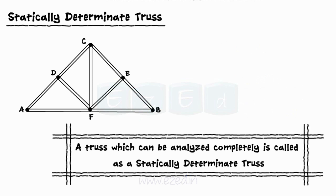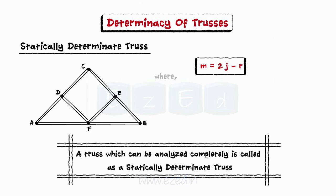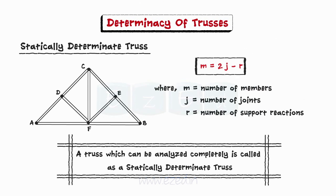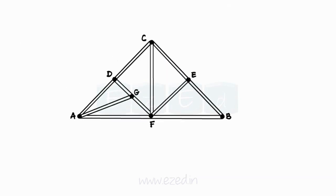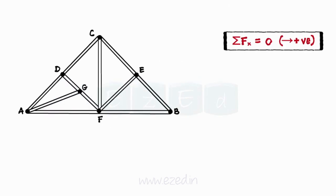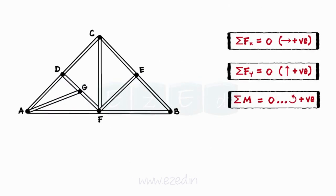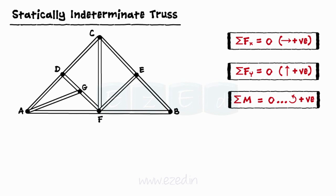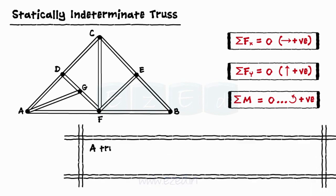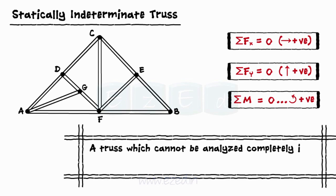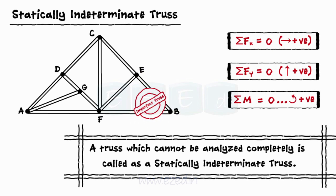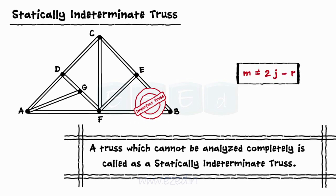For a truss to be statically determinate, the following condition must be followed. This equation gives us a relation between the number of members, joints, and support reactions. A truss in which we cannot find the forces in all the members by applying the three conditions of equilibrium is known as a statically indeterminate truss — a truss which cannot be analyzed completely.